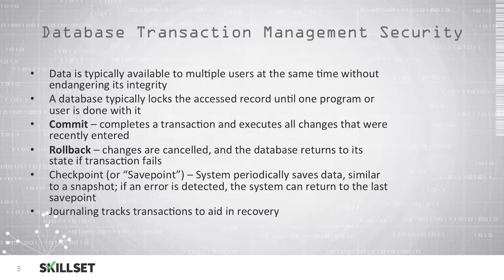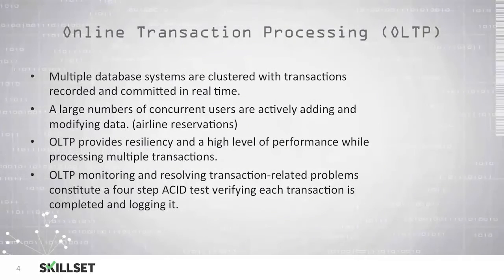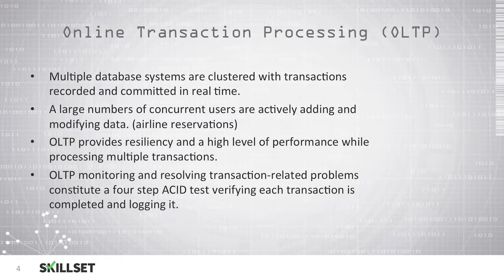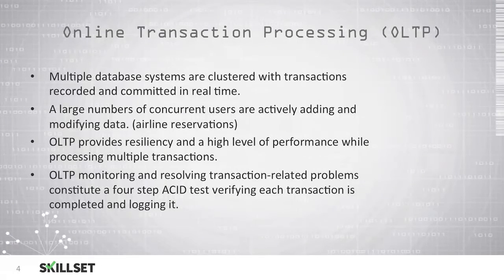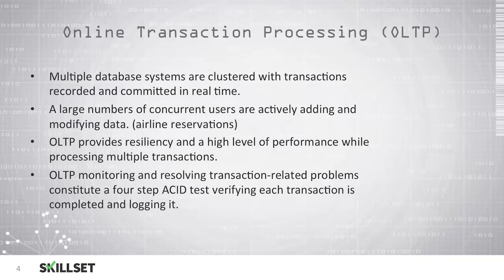Journaling is used in databases to track transactions to aid in recovery in case something goes wrong. OLTP, or online transaction processing, uses multiple database systems clustered together with transactions that are being recorded and committed in real time. Generally, there are a large number of concurrent users actively adding and modifying information in the database.